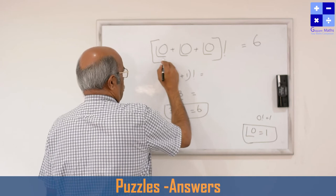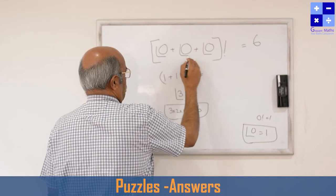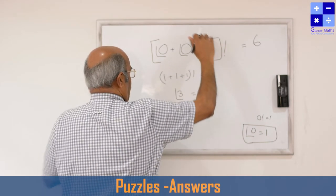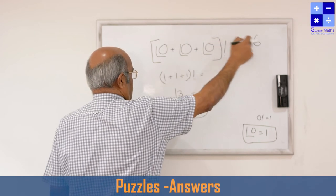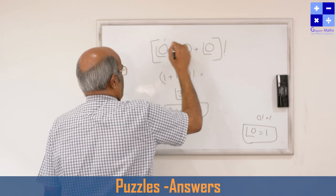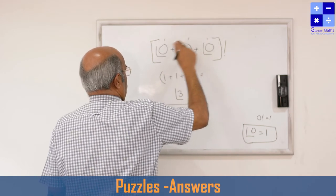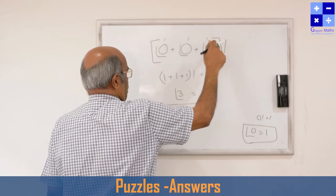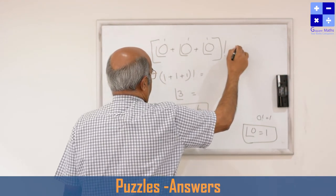So factorial 0 plus factorial 0 plus factorial 0, put everything in a factorial—that answer will be 6. Why? Because this is 1, this is 1, this is 1. 1 plus 1 plus 1 is 3. Factorial 3 is 3 times 2 times 1, that is equal to 6.